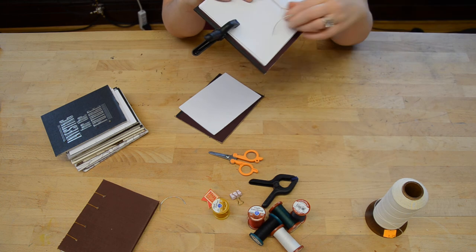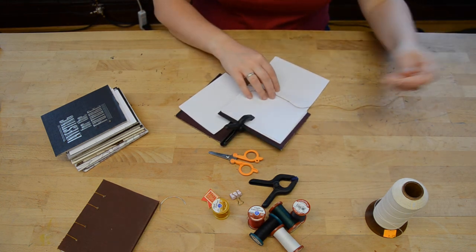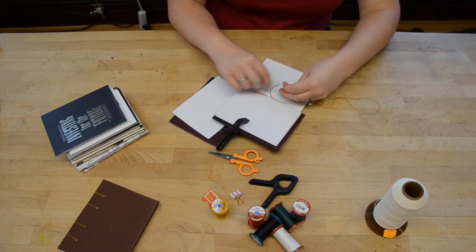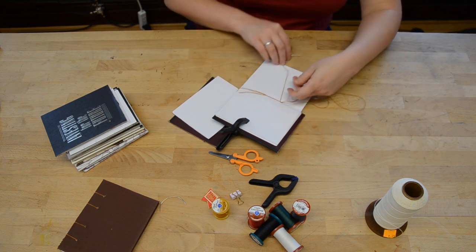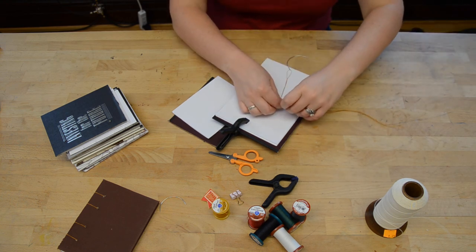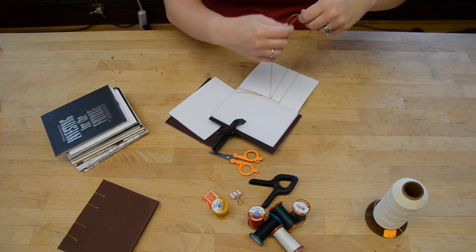And if you want to feel extra confident that nothing will get lost at this point, you can tie one extra knot. That way, if for some completely inexplicable reason something were to go wrong with those knots, you would know that the notebook as a whole is still going to be secure.